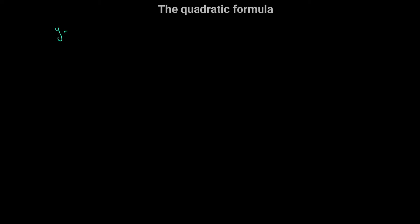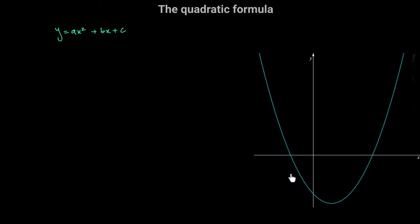In this video we're going to learn about the quadratic formula. Let's say that I have the quadratic equation y is equal to ax squared plus bx plus c. So here I have the equation of a parabola. Let's take a quick look at a sketch for this parabola. We have this parabola with the equation y equal to ax squared plus bx plus c, and what I want to do is determine the x-intercepts — the roots — in terms of a, b, and c.